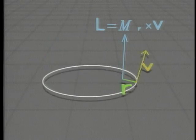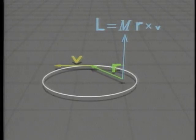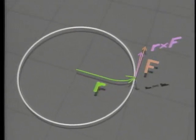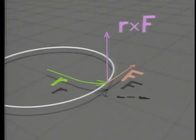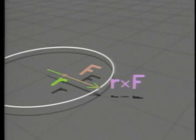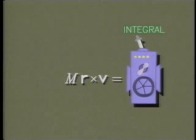And third, angular momentum. If the twisting force, R cross F, is zero, its integral, the angular momentum, is conserved.